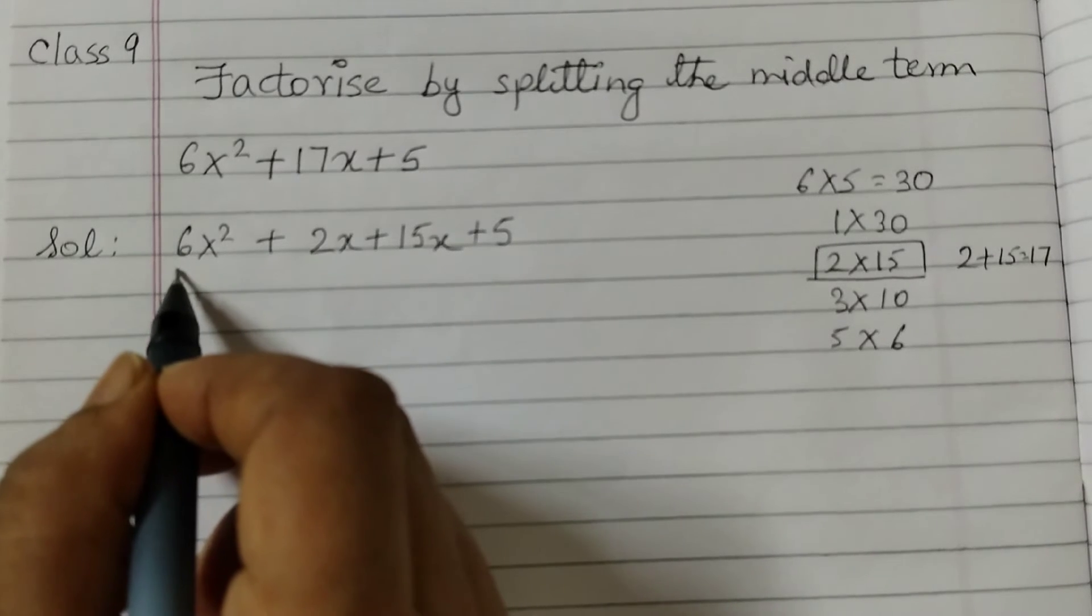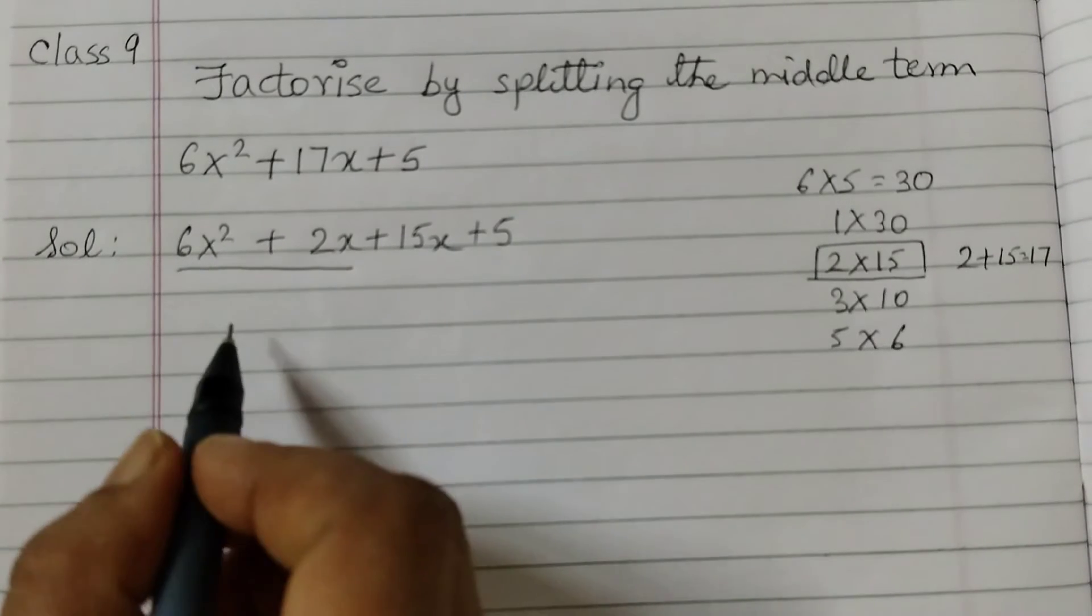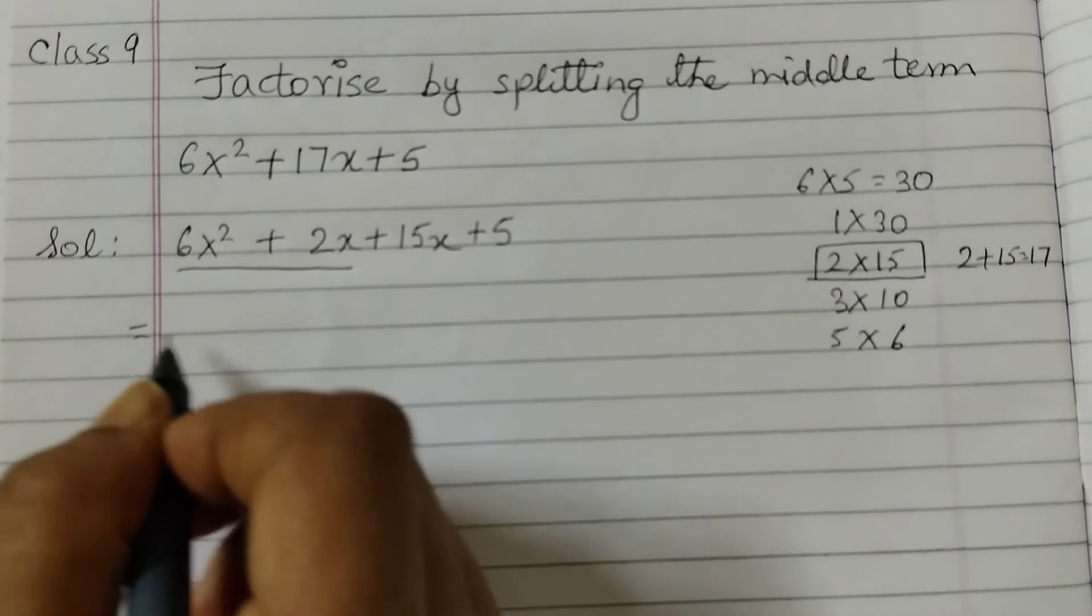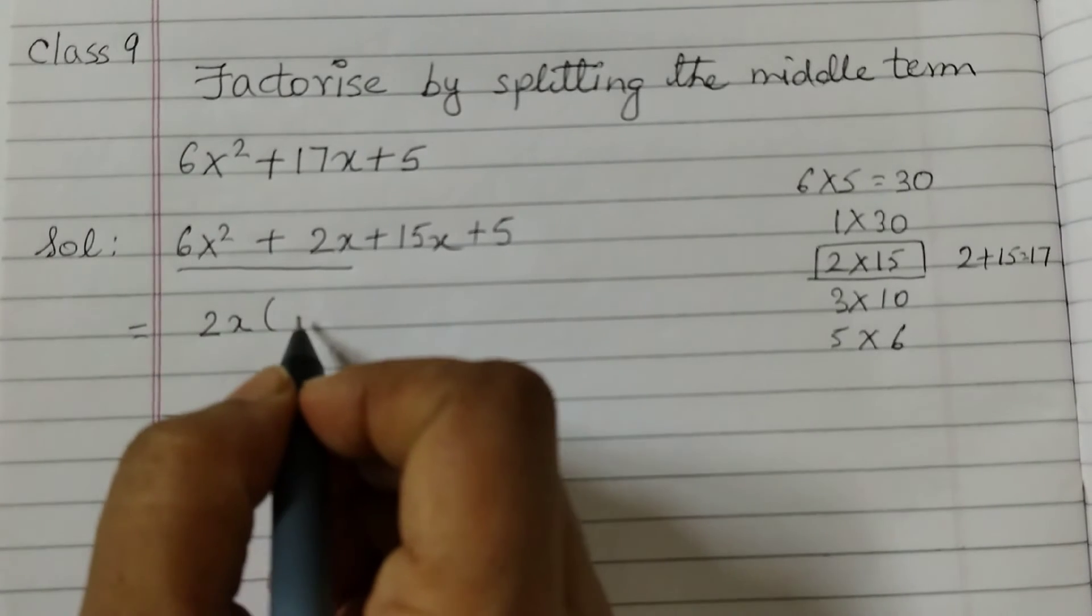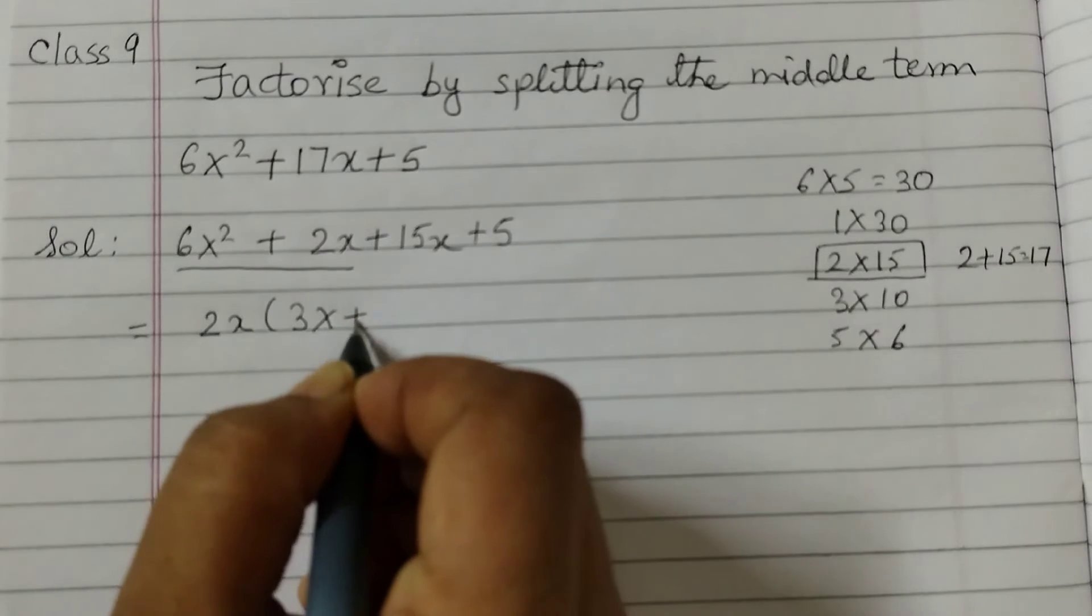Now group these. Take this one first. Take out the common factors. That is 2x. So we are left with 3x plus 1.